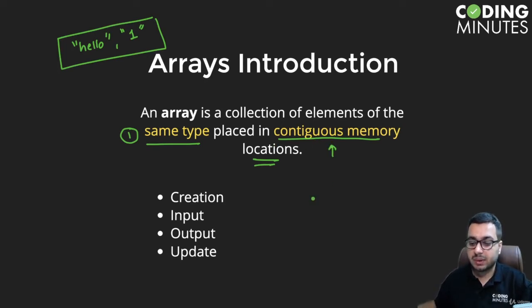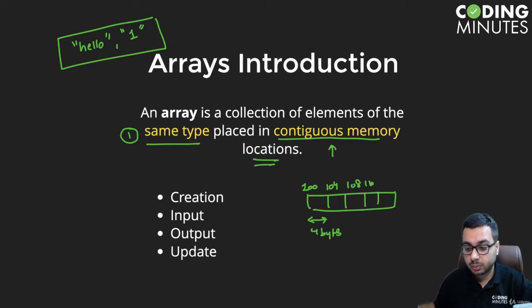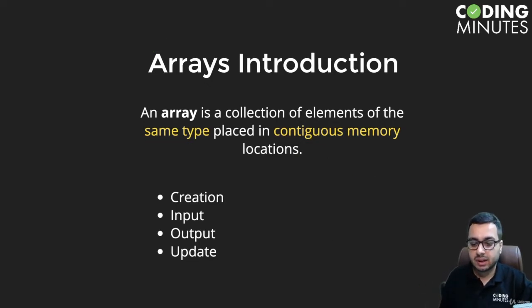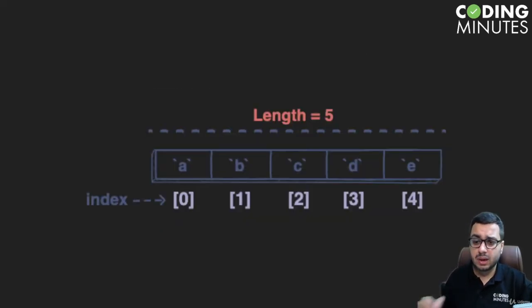And they are placed in a continuous memory location. That means each bucket is - let's say if each integer is taking 4 bytes, and let's say if this address of the memory is 100, then the next address will be 104, the next address would be 108, the next address would be 112, and so on. So that means arrays lie linearly inside the memory. Now we will look at how we can perform different operations on arrays - how we can create, input, output, and update.